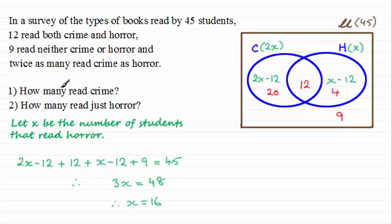So we can now answer these two questions. So the answers to these then we've got for number one, how many read crime? Well that's going to be 2x here or 20 plus 12 give us 32. And then for question two we've got how many read just horror? And that's going to be this section here, the 4. So I hope you're able to get those right and can see your way now through handling these algebraic types.